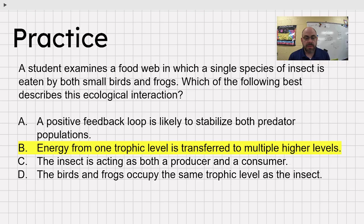Insects acting as both producer and consumer, and the birds and frogs occupy the same trophic level as the insect. I'm going with B. Energy from one trophic level is transferred to multiple higher levels. Because the frog, the other one positive feedback loop is not stabilizing. It's an unstabilizing thing. The insect is acting as, nope, that's not even close to true. Birds and frogs occupy the same. They do not, because they obviously occupy different trophic levels. And so here we have birds and frogs on different trophic levels. And that energy is being transferred to both of them.